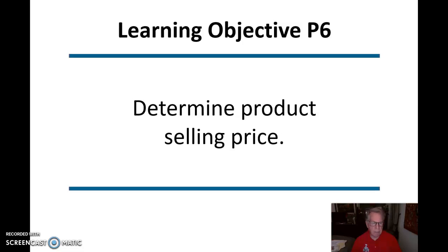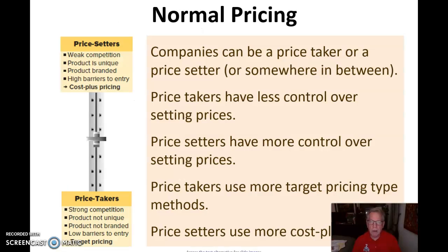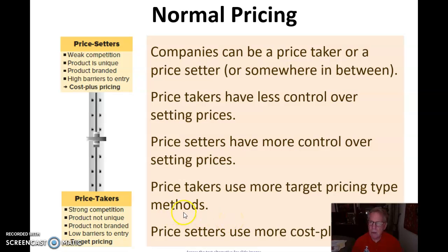Determine product selling price. I don't like to determine selling price based on cost — we want to sell at what the market will bear. But sometimes this is very useful for deciding whether we can get into a product line. Companies can be a price taker, a price setter, or somewhere in between. Price takers have less control over setting price, while price setters have more control. Price takers use target pricing methods, whereas price setters use cost-plus pricing.